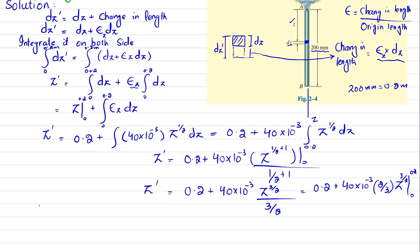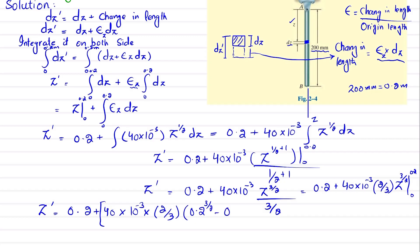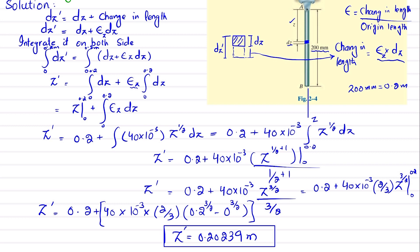Applying the limits, z_dash = 0.2 + 40×10⁻³ × (2/3) × (0.2^(3/2) − 0^(3/2)). Using a calculator, z_dash comes out to be 0.20239 m. This is the new total length of the rod when subjected to the increase in temperature.